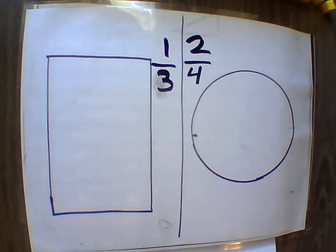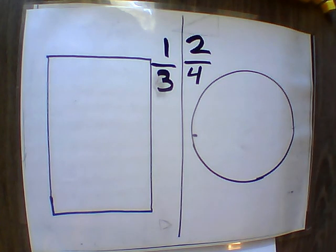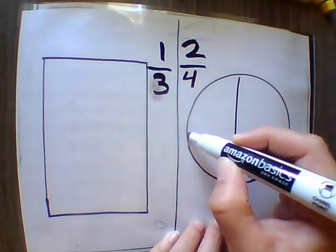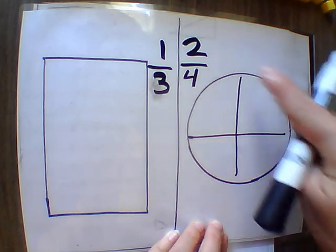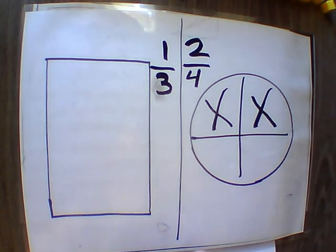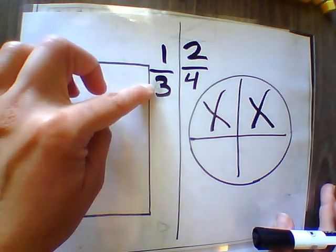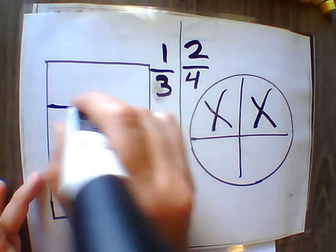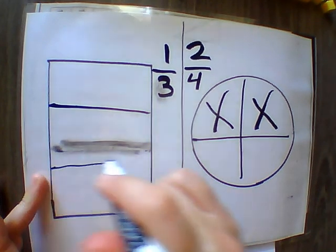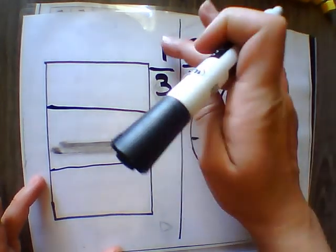Now pause the screen and complete the fractions. I'm going to start with the circle and cut it into 4 equal pieces, then color in 2 fourths — or 2 quarters — of that. Then I'm going to cut my rectangle into thirds, or 3 equal pieces, and color in 1 third of those.